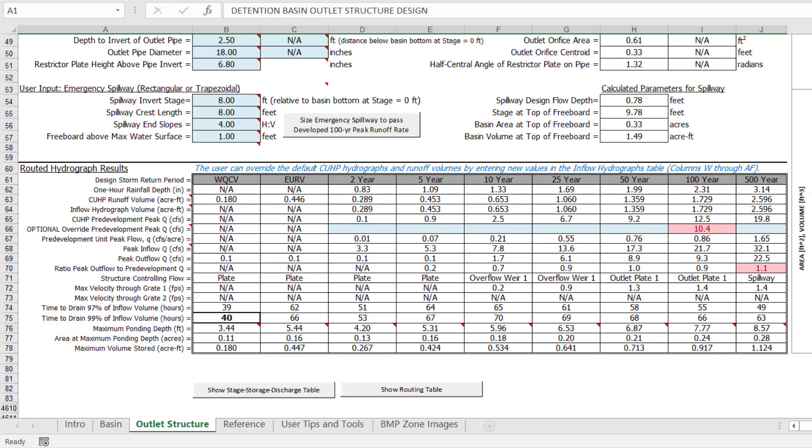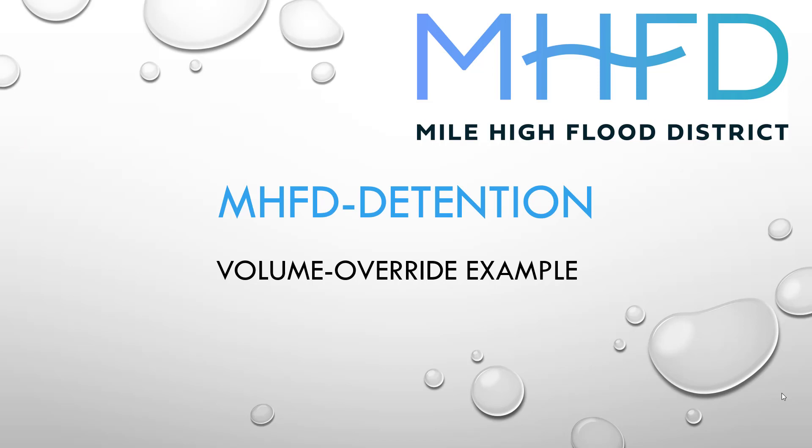That concludes this design example. I hope this video was helpful in understanding how to enter and interpret user overrides for zone volumes in the stage-area relationship. Be sure to check out the other instructional videos available.